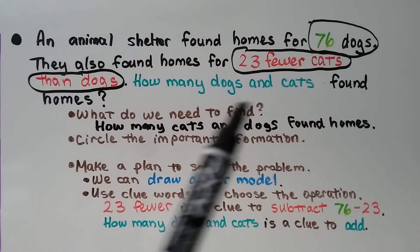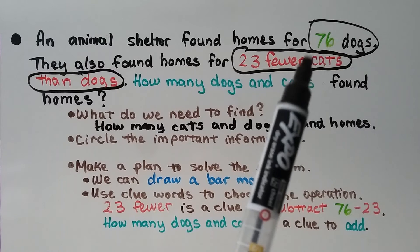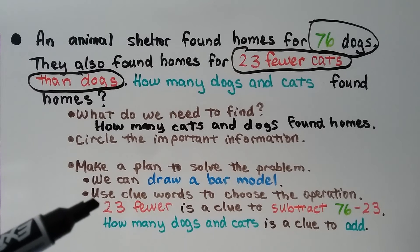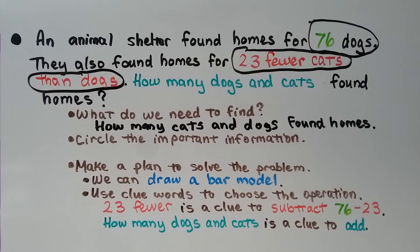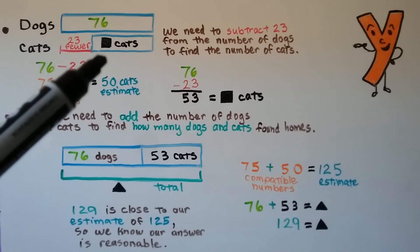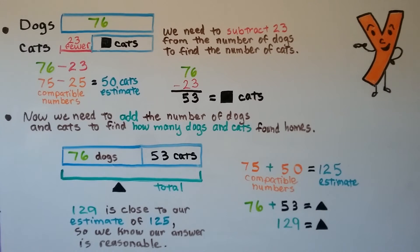If there were 23 fewer cats than dogs, we need to find 76 minus 23 to find how many cats. 'How many dogs and cats' is a clue to add, so we need to subtract and then add — there are two steps to this problem. Because we're subtracting, we make two bars: one to show the amount for the dogs, 76, and one to show the amount for the cats. The cats number was 23 fewer than the 76 dogs, so we need to subtract 23 from the number of dogs to find the number of cats.